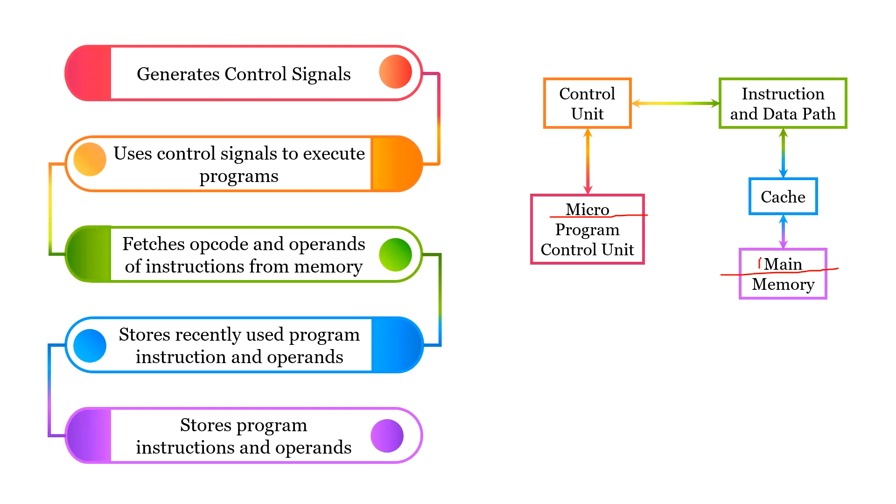Instructions and associated data from main memory are stored in cache, and further through instruction and data path, they are provided to the control unit where they will be executed with the help of control signals provided by the microprogram control unit.